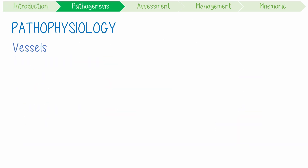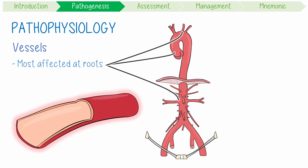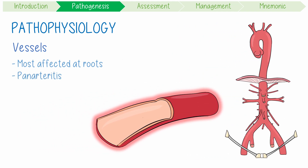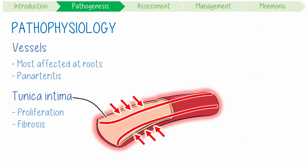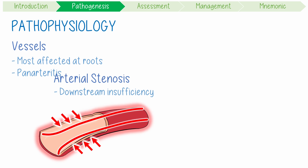Pathophysiologically, vessels are most affected at their roots and all layers of the artery are involved, making TAK a panarteritis. The tunica intima, which is the innermost layer, shows marked proliferation and fibrosis. This causes narrowing of the lumen and can result in arterial stenosis leading to downstream arterial insufficiency.